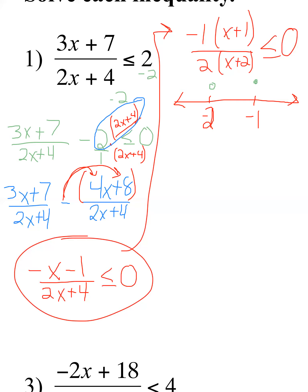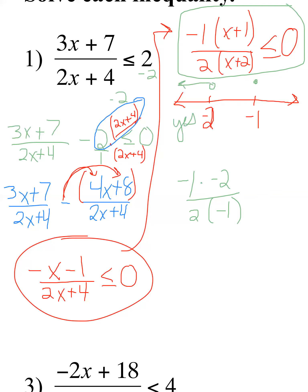Let's plug in test values using the factored form. Testing x = -3 (left region): numerator gives -1 × (-3 + 1) = -1 × -2 = positive; denominator gives 2 × (-3 + 2) = negative. Positive over negative is negative — that's ≤ 0, so yes, that region works. Testing x = -1.5 (between -2 and -1): numerator is negative, denominator is positive — positive over positive is positive, which is NOT ≤ 0, so that's a no.